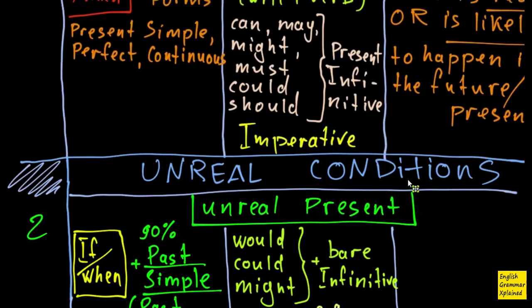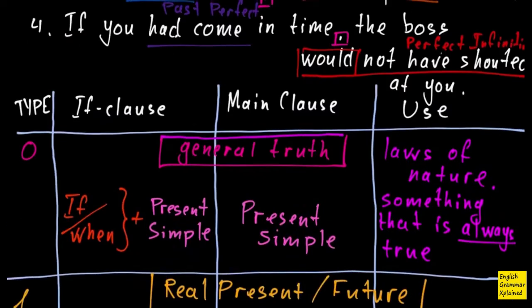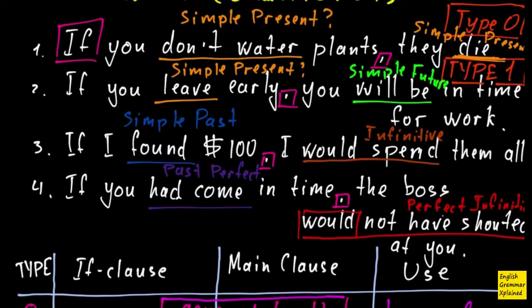So if I look at my examples in the beginning, here, number three, if I found $100, I would spend them all. If I found that simple past, and I would spend would plus bare infinitive here, and that's classical type two. That's type two condition.